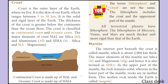Looking at the structure of the crust: the crust is 5 to 70 kilometers thick. There is the continental crust and the ocean crust. The terms lithosphere and crust are not the same — the lithosphere includes the crust and the uppermost part of the mantle. All terrestrial planets have a lithosphere. The lithospheres of Mercury, Venus, and Mars are much thicker and more rigid than that of the Earth.